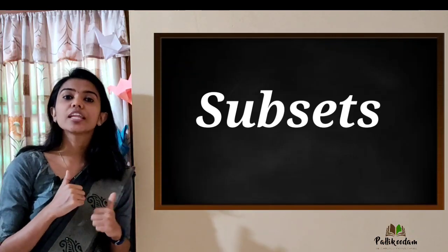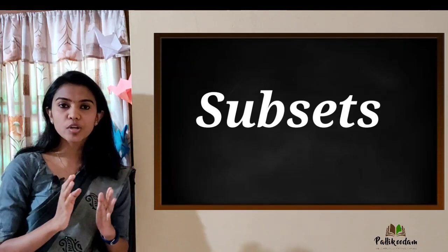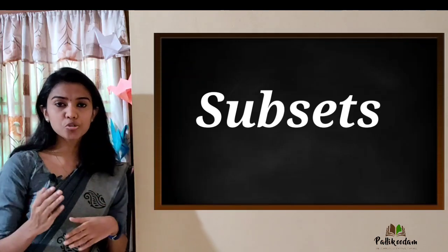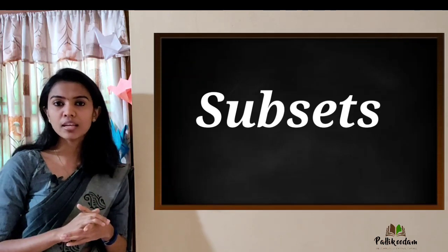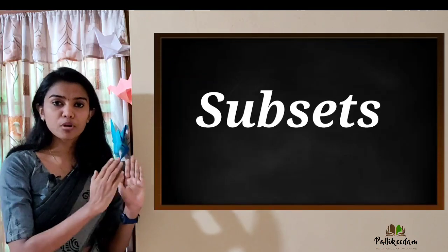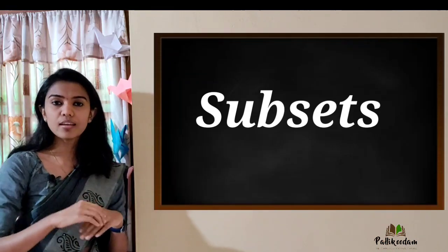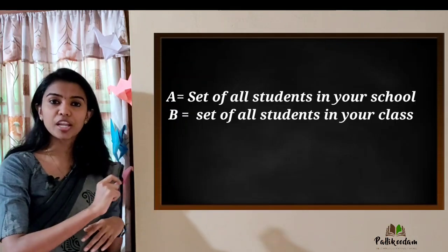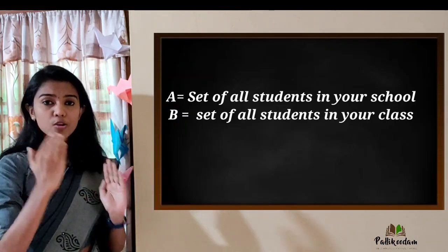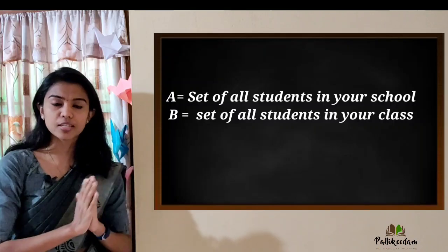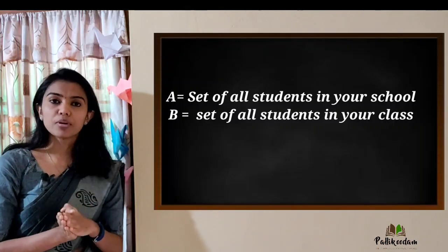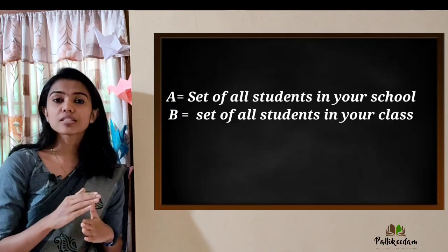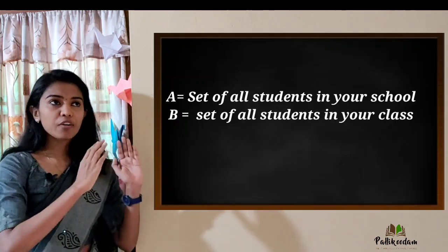Consider the number of students in your school. If you are in an LKG to Plus 2 school, A is the set of all students in your school — every class and every division. B is the set of number of students in your class only.